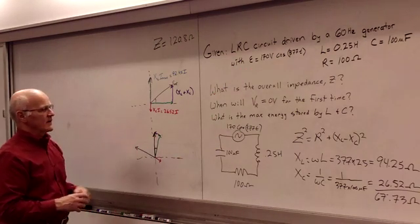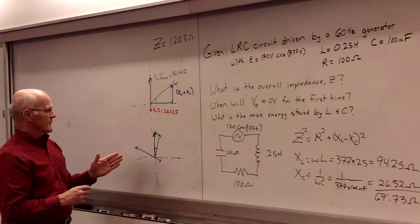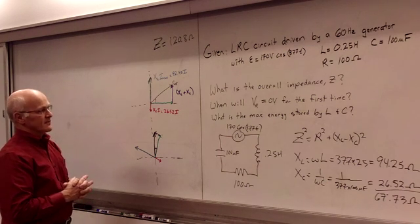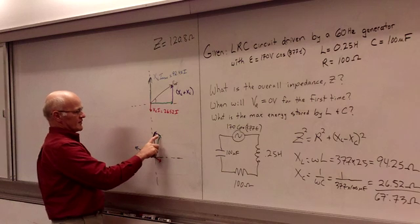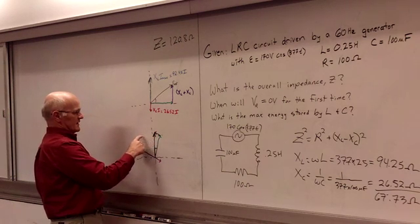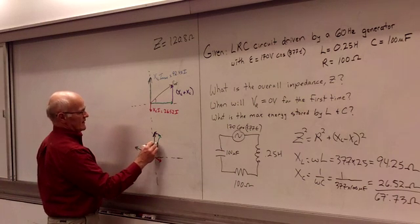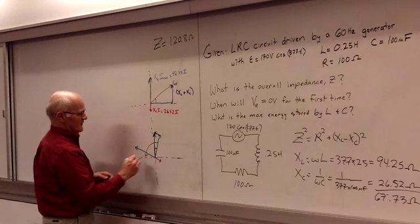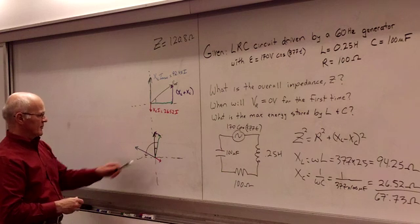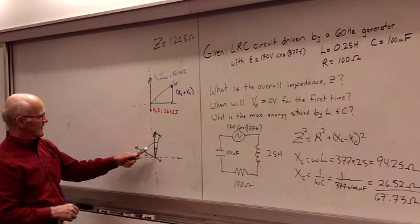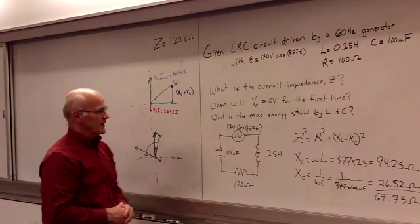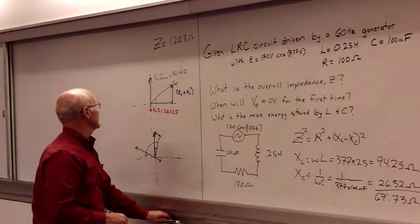So what we're asking is when is the resistor voltage going to be zero for the first time. So this is our resistor voltage. We have to wait for this thing to rotate. And when it gets all the way over to here, that's going to tell us when it's going to be zero for the very first time.